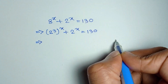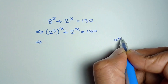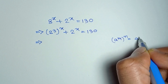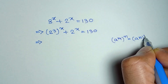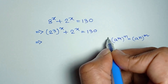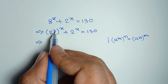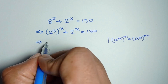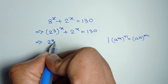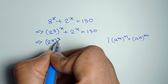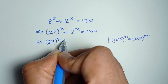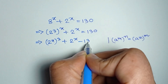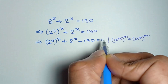Applying the formula a to the power m, whole to the power n is equal to a to the power n whole to the power m — here m is equal to 3 and n is equal to x — we get 2 to the power x, whole to the power 3, plus 2 to the power x minus 130 is equal to 0.